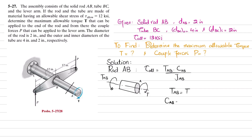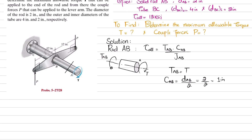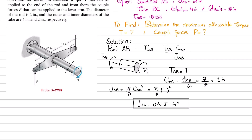Now c_AB equals d_AB divided by 2, so 2 divided by 2 equals 1 inch. We also calculate the polar moment of inertia J_AB for this solid rod, which equals π/2 · c_AB⁴. So J_AB = π/2 · (1)⁴, giving J_AB = 0.5π inch⁴.